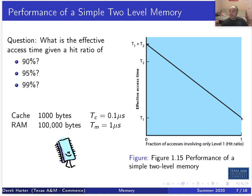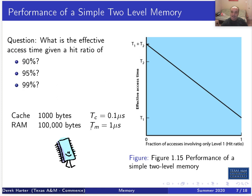This figure should make sense: if the hit ratio is 1, that means 100% of the time we can get the value from cache — everything we need fits in cache and we never go to slower memory — so the average time is just Tc, the cache access time. If the hit ratio is 0 — 100% misses — every time we first go to slower memory for 1 microsecond, transfer to cache, then access from cache, so it's Tm + Tc = 1.1 microseconds.